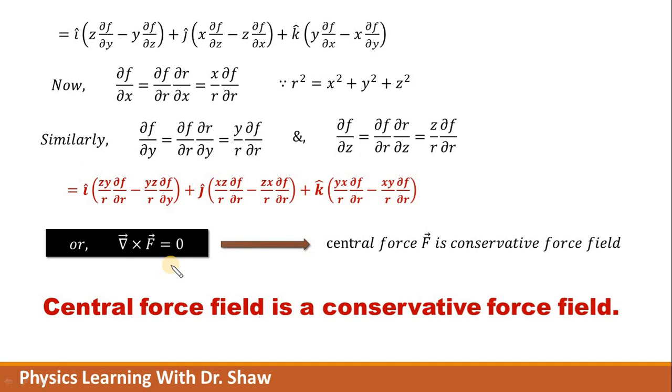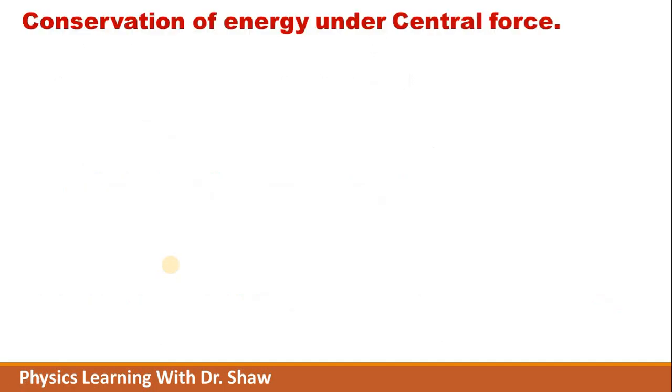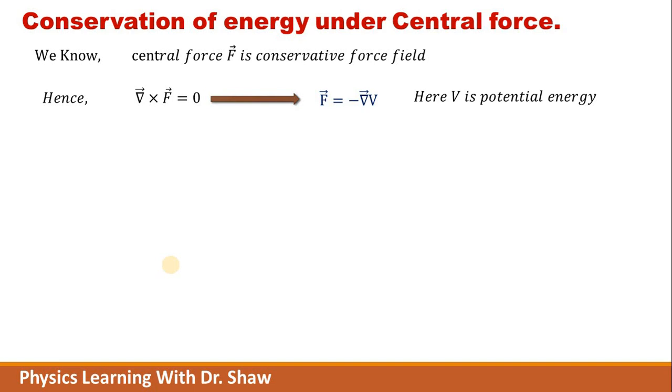The second property which I am going to talk about is the consequence of a conservative force field. If a force field is conservative, then energy in that kind of force will always be conserved. So now I have already proved that central force is a conservative force, therefore curl of F is equal to zero. And if the curl of any vector quantity is zero, then that vector quantity can be written as the gradient of some scalar.